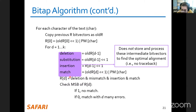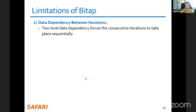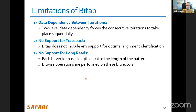BitAp also lacks functionality we need. Recall we need to report CIGAR strings — the list of edits to convert one string into another — and that requires traceback. BitAp out of the box supports calculating edit distance but cannot report how it reached that edit distance, which is what the CIGAR string captures. So there are data dependencies between operations, no support for traceback, and poor scalability to long reads up to millions of characters.